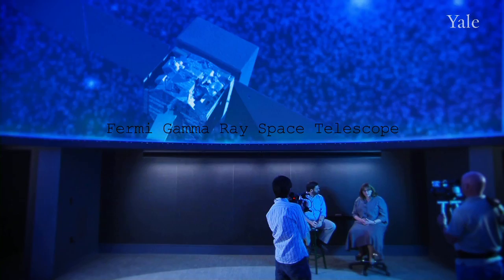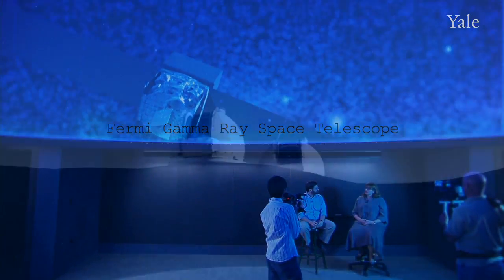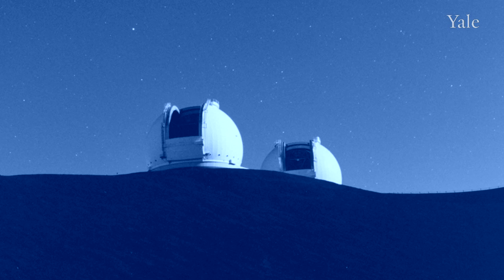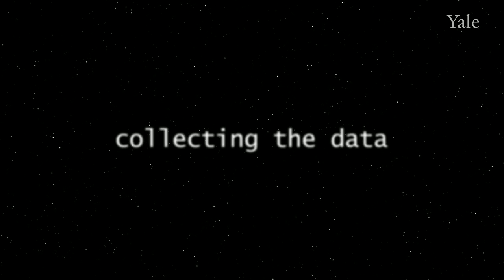For the supermassive black holes, we use the Yale Keck telescope to study the galaxy surrounding the black hole, so that we can try to discern whether there are visible effects on the stars and the material in the galaxy from this active black hole that's accreting at the center of the galaxy.